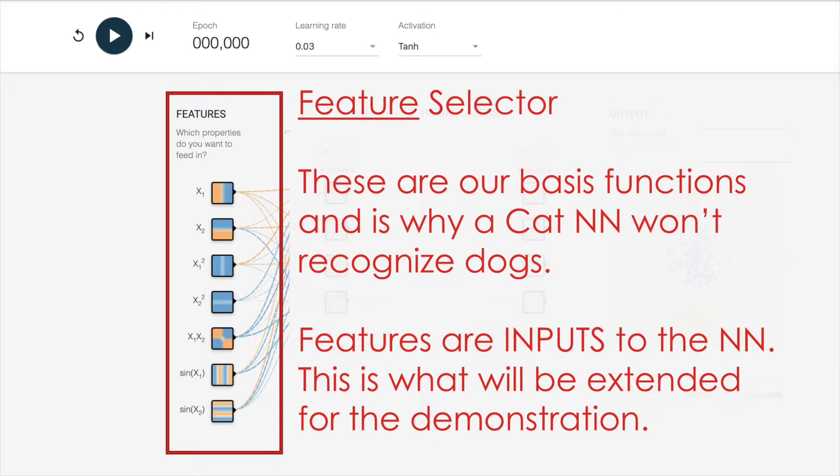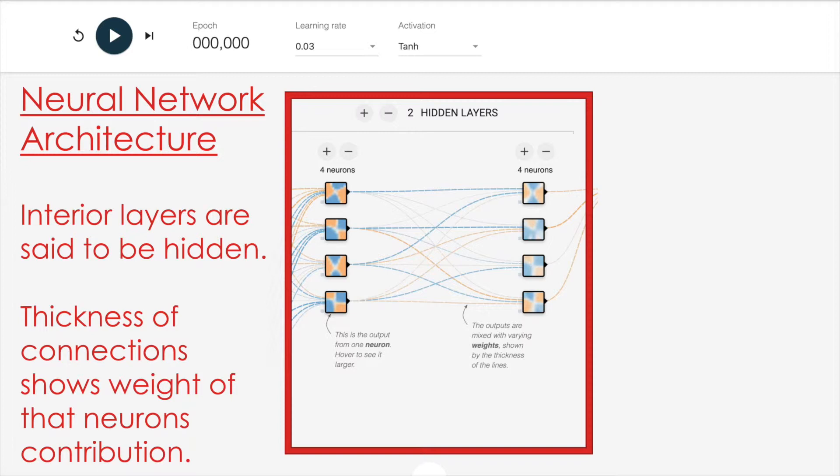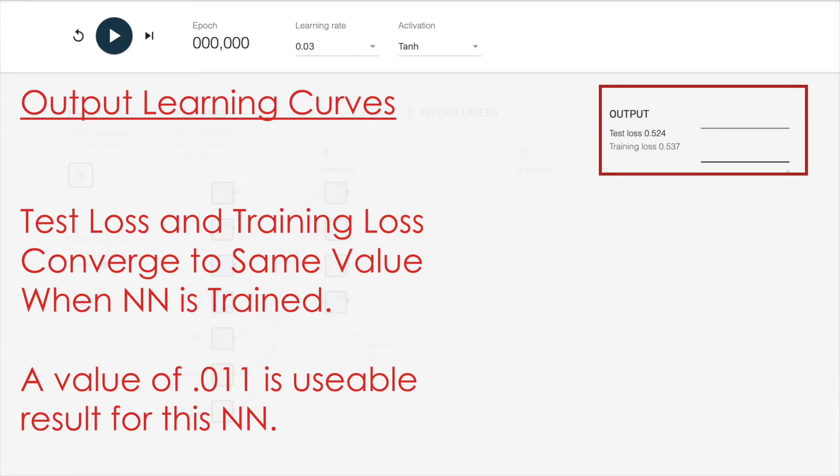The final center window is the neural network architecture. These interior layers are called hidden layers in a deep layer neural network, and the thickness of the lines between them shows the weight that that neuron contributes to the final pattern recognition process that takes place. The output learning curves we see on the right, and they're just these two curves, which in this example are two straight lines, show us our test loss and our training loss. And ideally they converge to the same value when the neural network is trained.